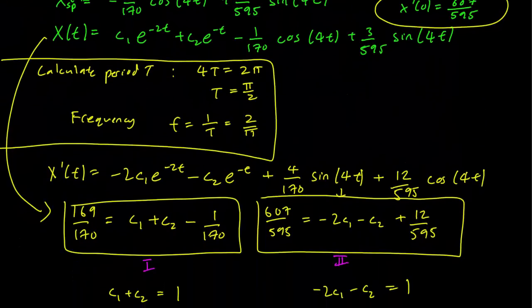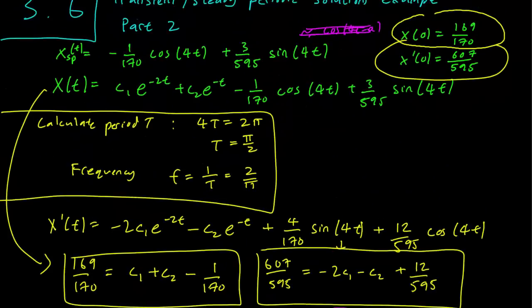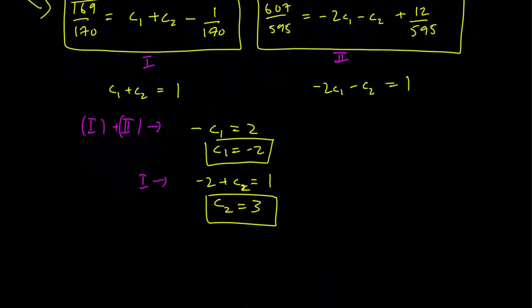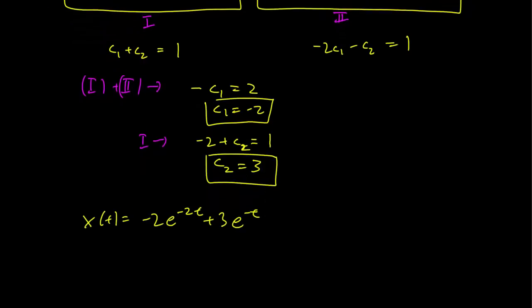And we can write down our general solution now as x(t) equals minus 2 e^(-2t) plus 3 e^(-t) plus whatever the steady periodic solution was.